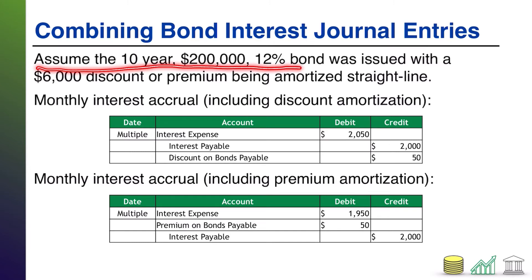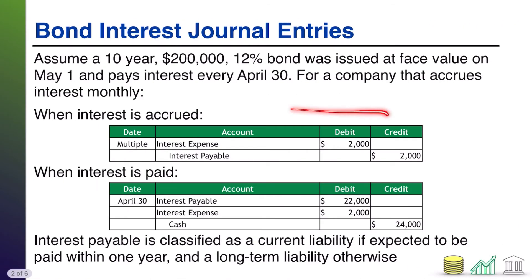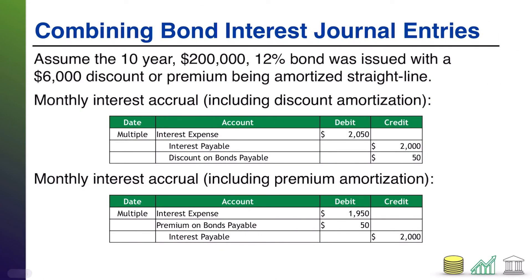So let's take a look at how this plays out in a full scenario. We're going back to that 10-year, $200,000, 12% bond, and assume it was issued with a $6,000 discount or premium being amortized straight-line. Remember, our monthly interest accrual was: debit interest expense $2,000, credit interest payable $2,000. Now we're going to look at the situation with a premium or discount also being amortized straight-line. It's a $6,000 discount or premium amortized over 10 years — that's $600 per year. And because we're accruing interest monthly, we'll amortize monthly: $600 divided by 12 months is $50 per month.